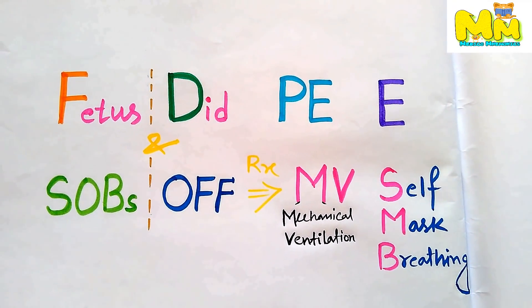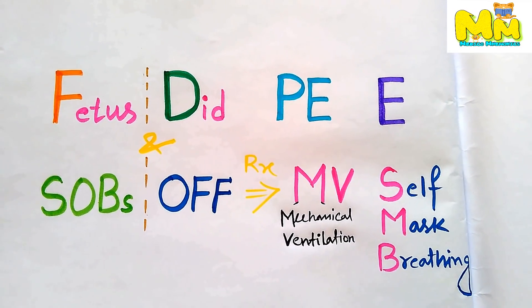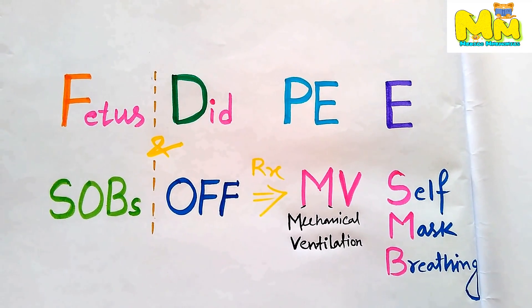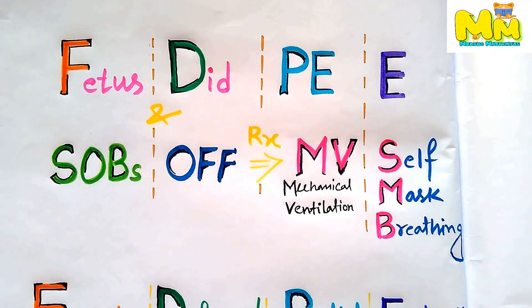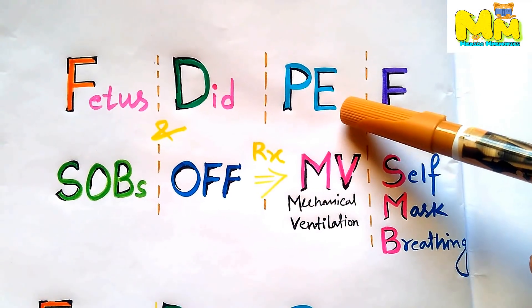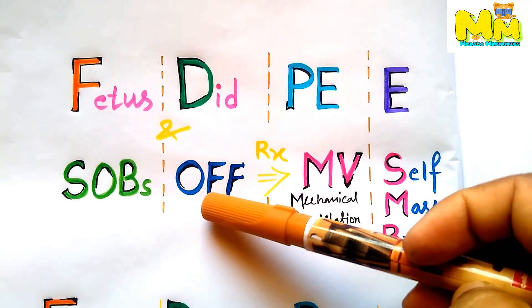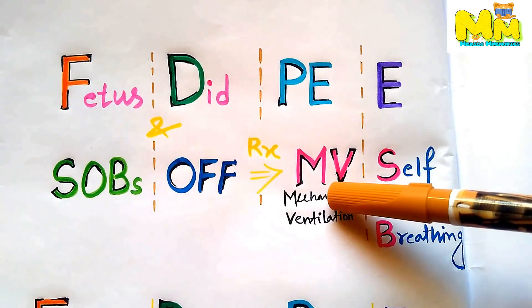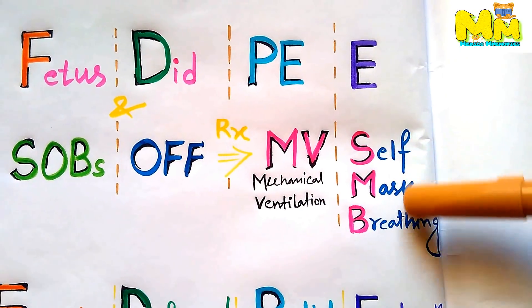We just have to remember this phrase and we will know all the engaging diameters in different attitudes. Let's revise it again: fetus did pee and sobs off, and the treatment given was mechanical ventilation and self mask breathing.